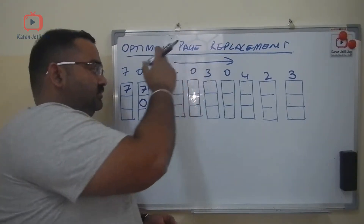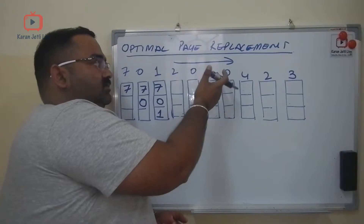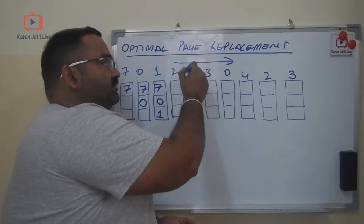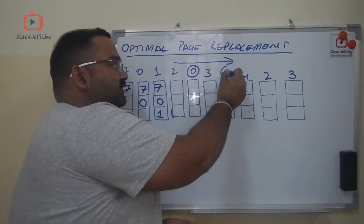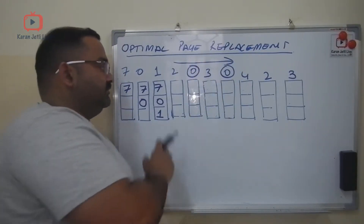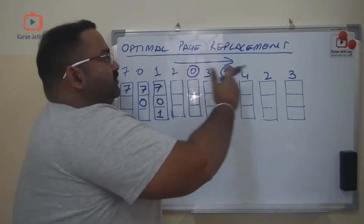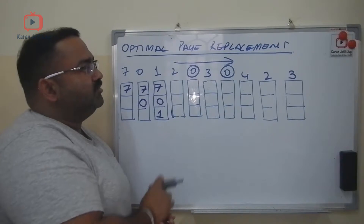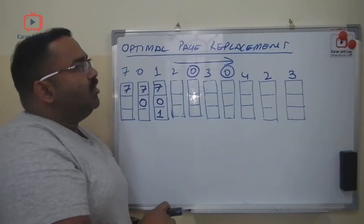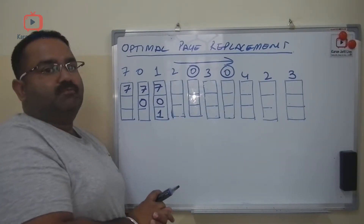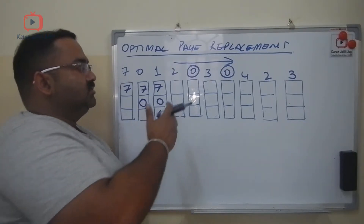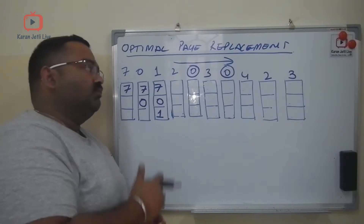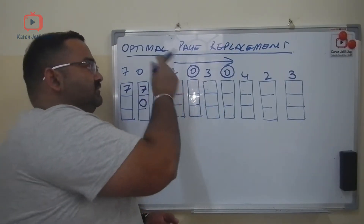Zero we need here — the next reference after this point is zero. Keep on looking: then one we do not need for a long time, and seven also we do not need for a long time. So which page should we replace? We do not need one, and we do not need seven, so right now we will replace seven.